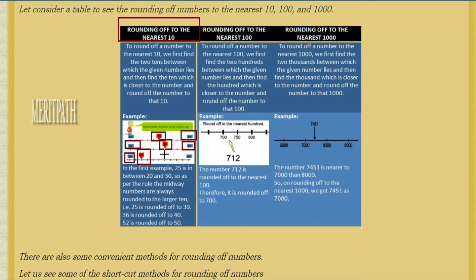Recapping: 36 — when we round this number, 36 is between 30 and 40. It is more than half, past 35, so this will be taken as 40. When we round 36, we get the value of 40.